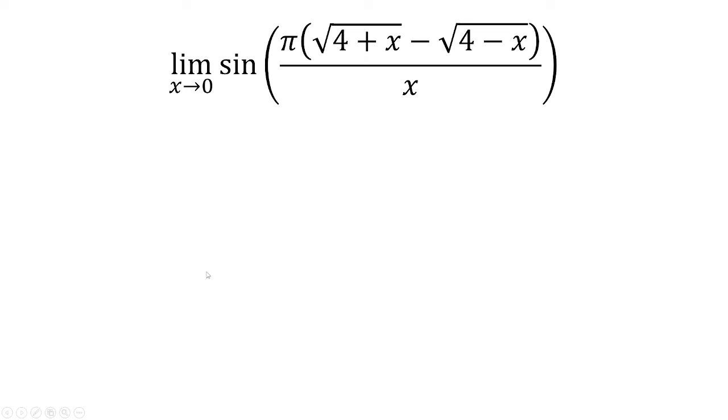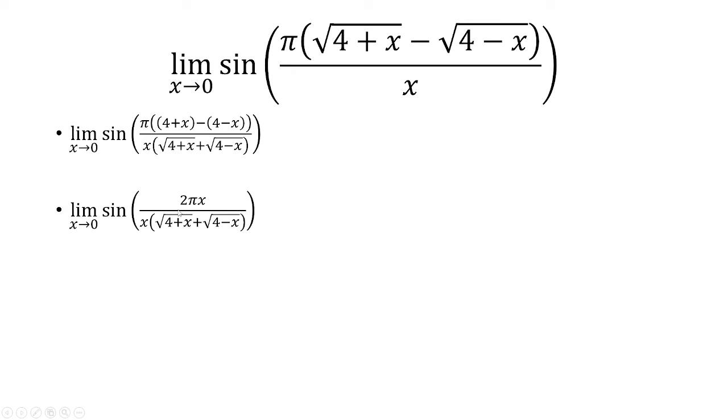Now at the top, we can simplify this because we have 4 minus 4 is 0, and then x minus negative x is 2x.